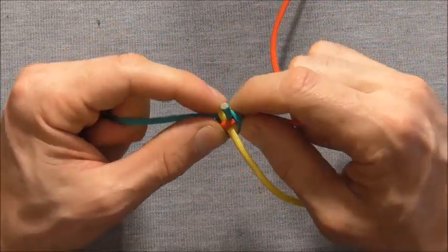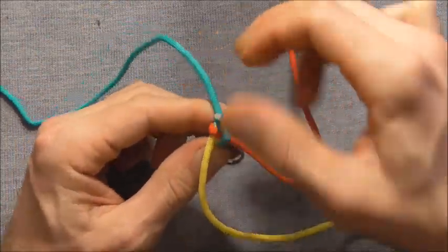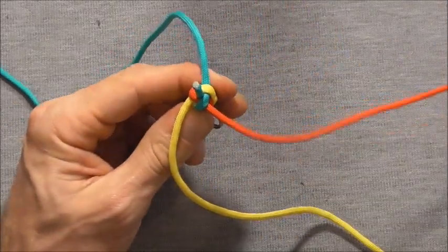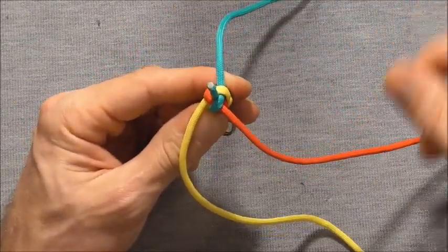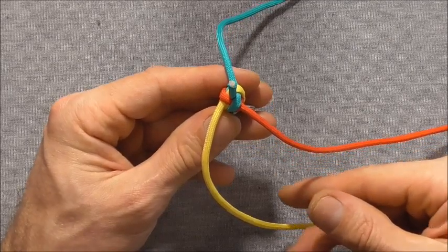So we are going to tie crown knots with the tag end going through the center. I will show you one more.